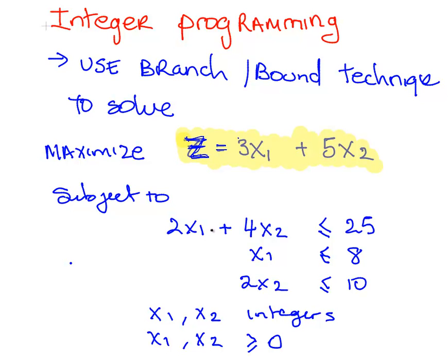2x1 plus 4x2 less than or equal to 25, x1 is less than or equal to 8, 2x2 is less than or equal to 10. x1 and x2 are integers, and they're non-negative.